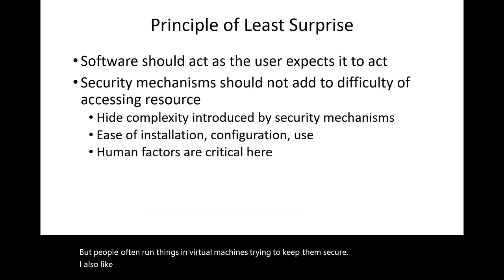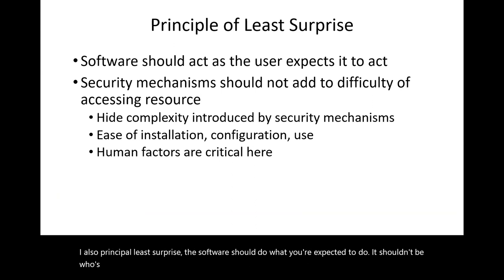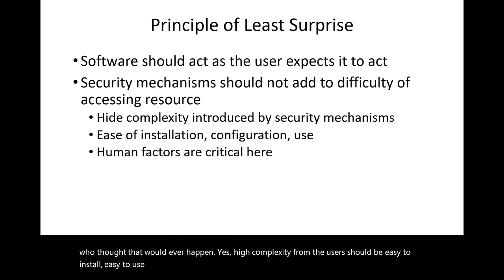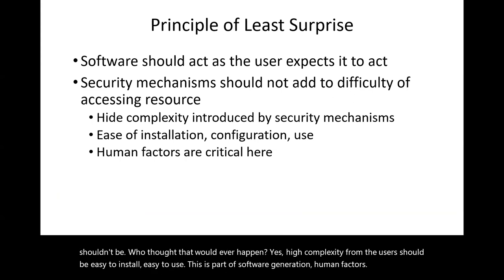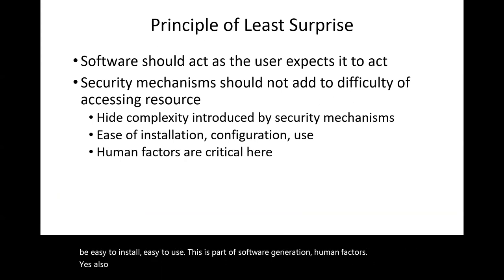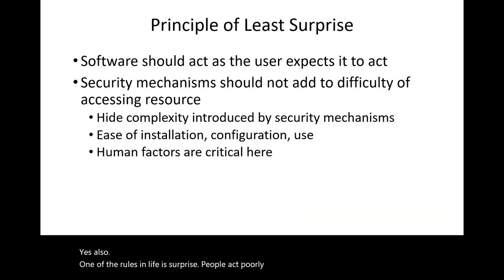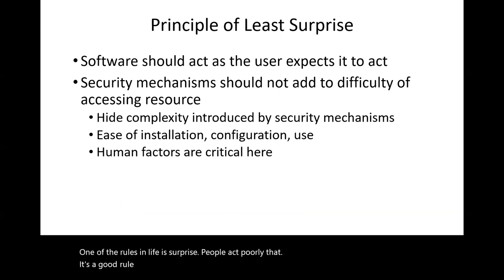The principle of least surprise: software should do what you expect it to do. High complexity is bad for users — it should be easy to install and easy to use. This is part of software engineering and human factors. One good rule in life is that surprised people act poorly — and this applies to software too. If users are surprised by software behavior, they act poorly.